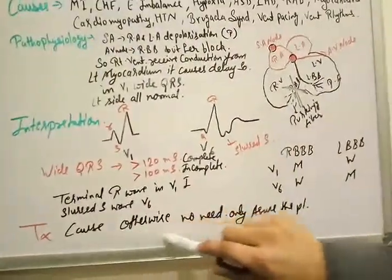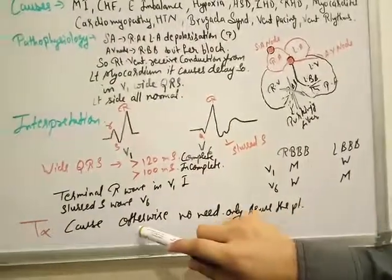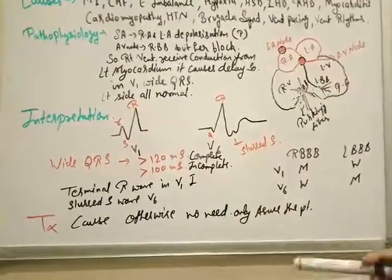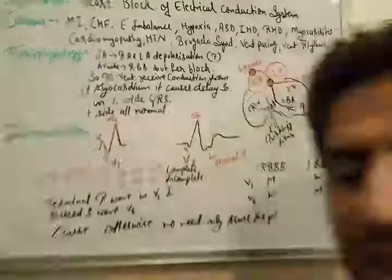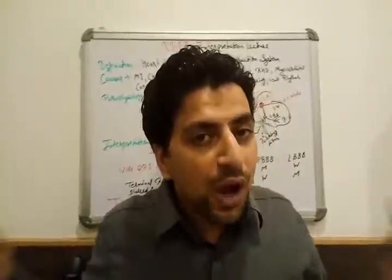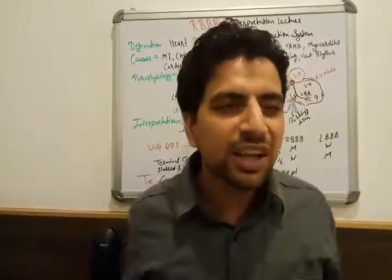If patient is mostly asymptomatic, otherwise no need for any kind of treatment. Only reassure the patient in case of right bundle branch block, friends. You have to reassure only, nothing else.